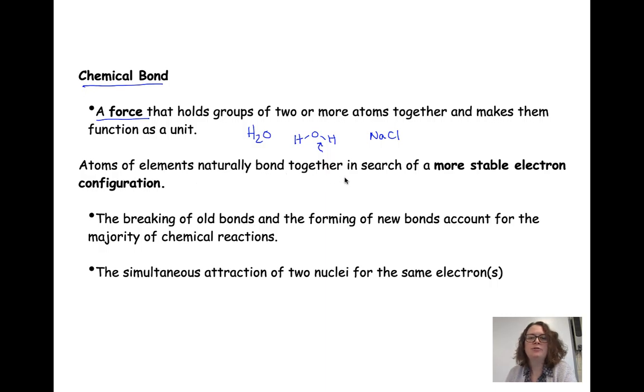Atoms of elements naturally bond together and they do this in search of a more stable electron configuration. So atoms on their own might not be very stable, but when they get together with other atoms they can become much more stable.